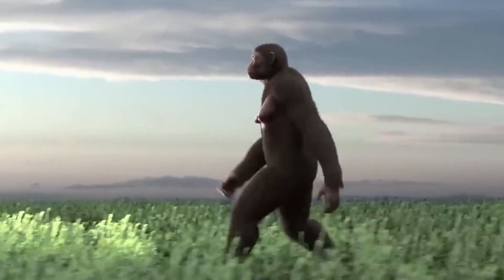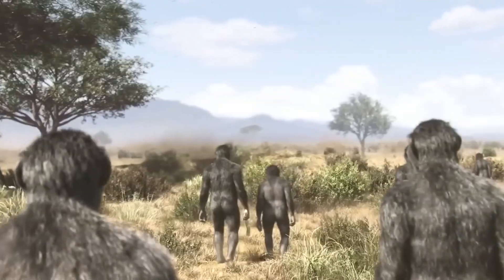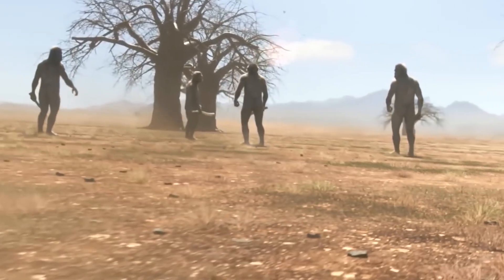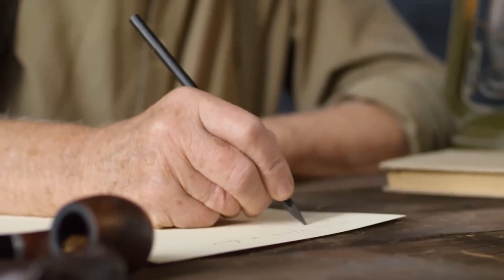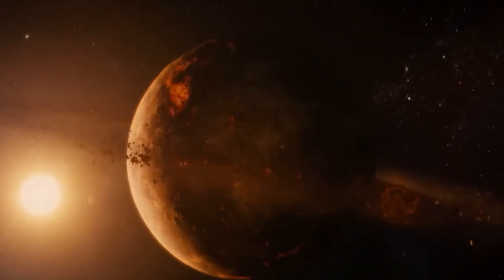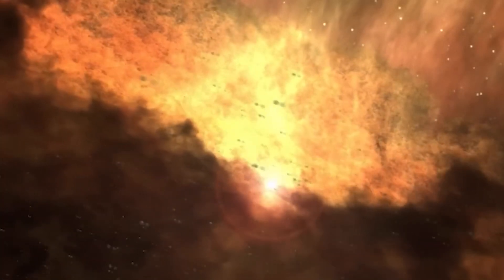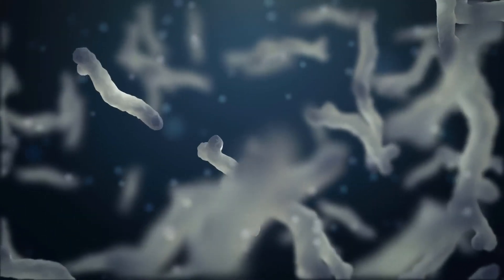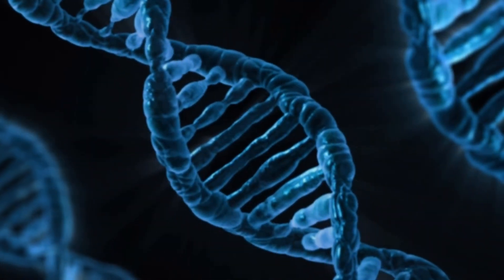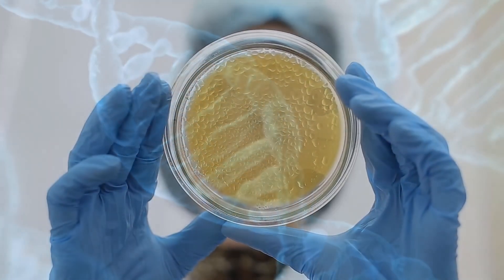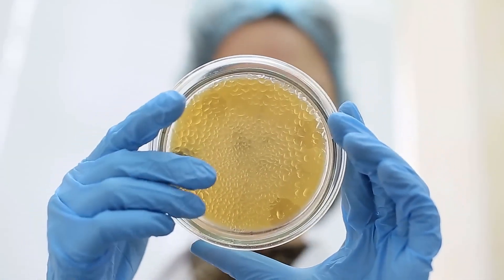Four theories. Four different paths. Each with its champions. Each with its flaws. But one question remains. How did dead matter cross the line into something that lived? Because between lifeless molecules and the first cell, there's a gap no one has fully closed. And somewhere in that gap was our first ancestor. Our beginning.